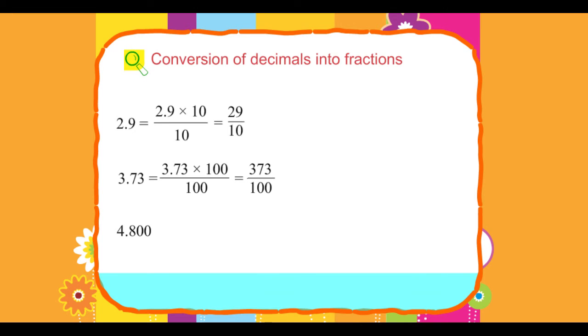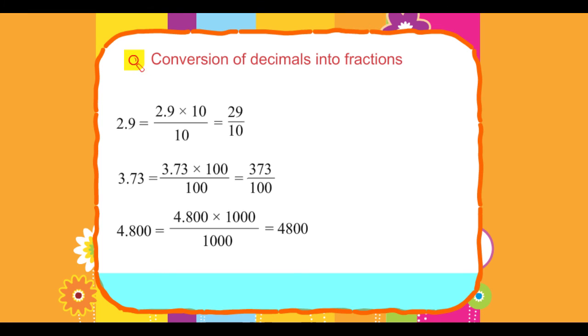4.800 equals 4.800 into 1000 upon 1000, equals 4800 upon 1000.